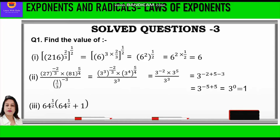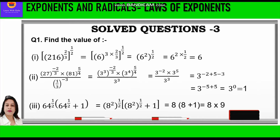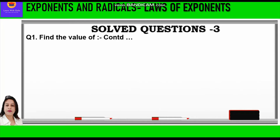Now let us move to the third question: 64 raised to power half, in bracket 64 raised to power half plus 1. Now 64 is 8 square, so we write 8 square raised to power half. The 2s cancel and we write 8 in bracket 8 plus 1, which becomes 9. So 8 into 9 is equal to 72.